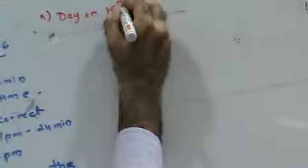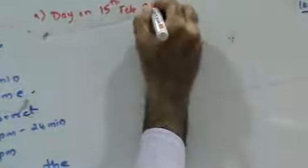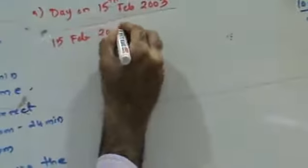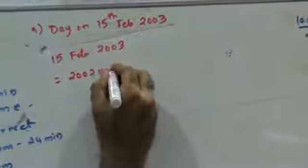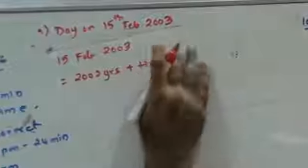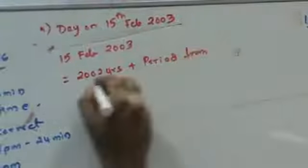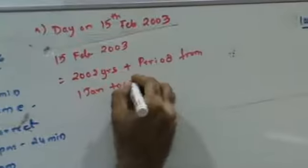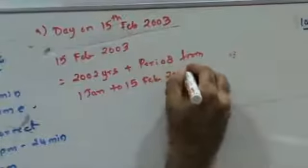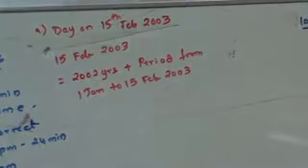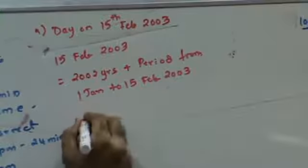Next problem: 15th February 2003. 2002 years are complete, plus the period from 1st January to 15th February 2003. In 2000 years there are 0 odd days. The next 2 years after 2000 are ordinary years, giving 2 odd days. So 2002 years has 2 odd days.